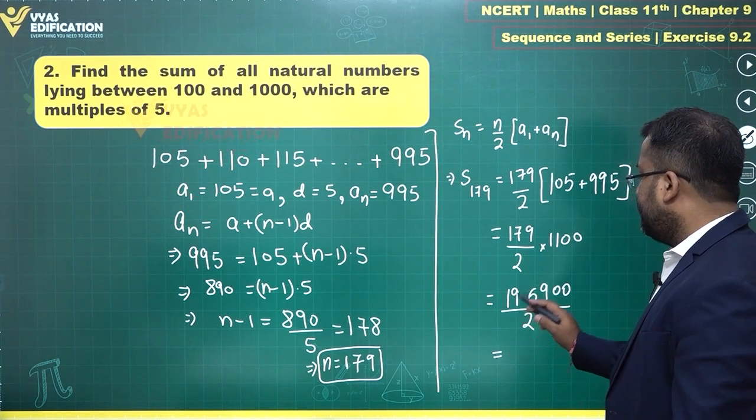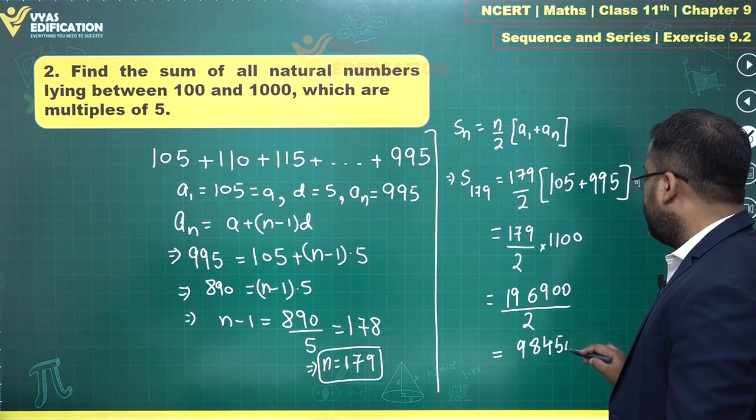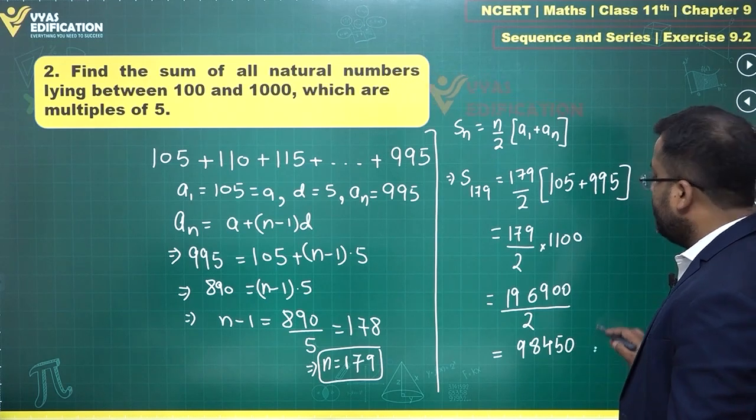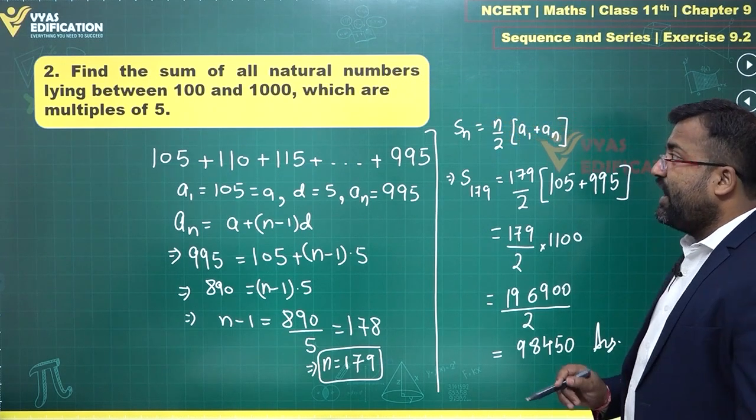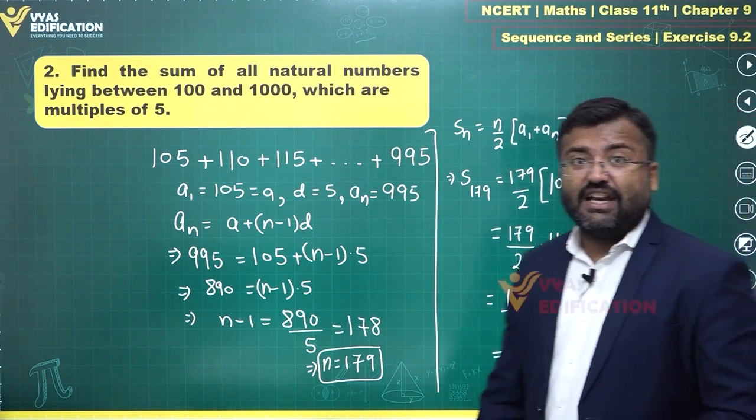This is 98450. 98450 is the sum, the required sum of these numbers. And that's all that you have in this second question.